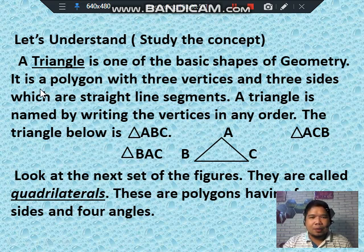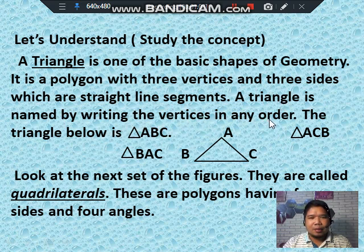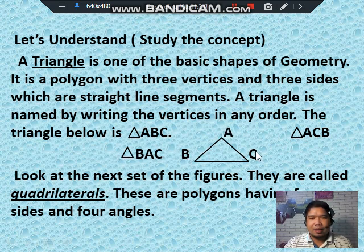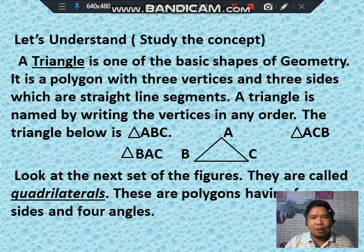A triangle is a polygon with three vertices and three sides, which are straight line segments. A triangle is named by writing the vertices in any order. The triangle below is triangle ABC, either triangle ACB or triangle BAC. Remember: a triangle is a polygon with three vertices and three sides.